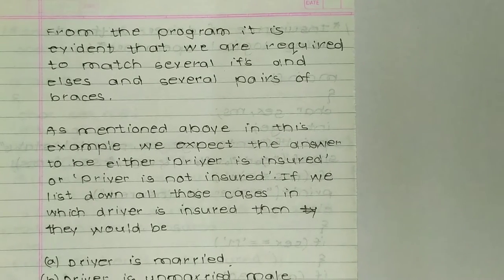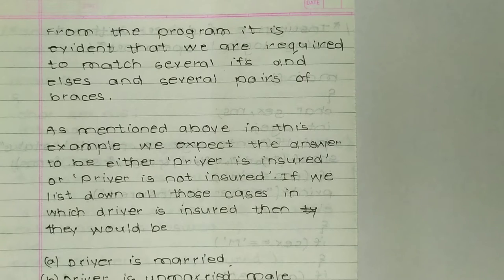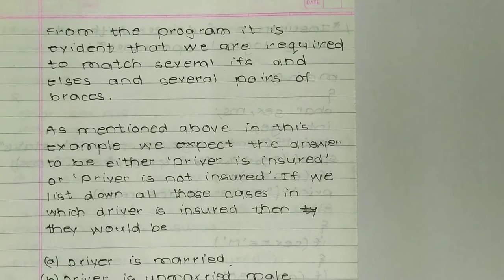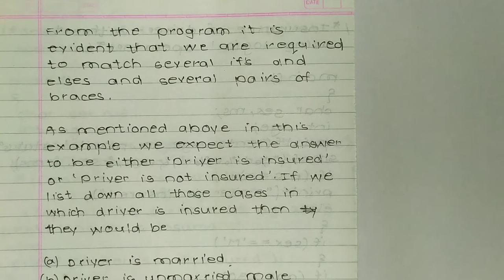From example 2.5, which was without using logical operators, we know that it is evident that we are required to match several ifs and elses and several pairs of braces. That means we have to use nested if-else statements. We can use nested if and else statements but we have to use several of them, too many of them.